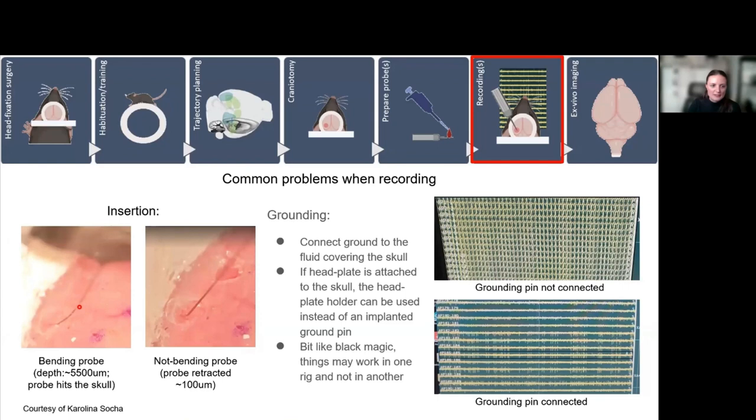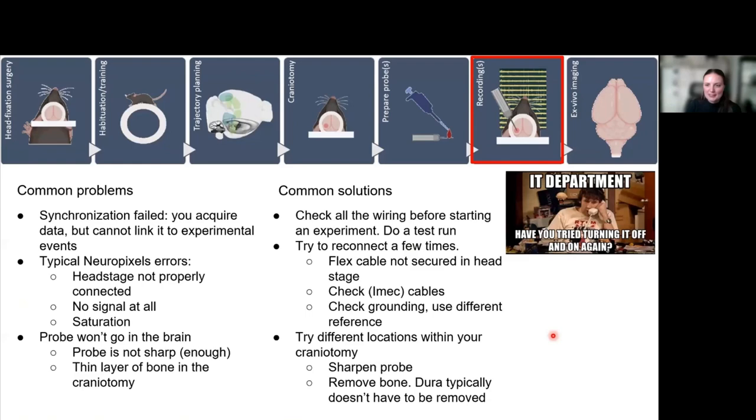There are a few common problems. One is insertion not going as planned because, for example, the probe bends. This is very scary at first when this happens. Just slowly go back up a little bit and try somewhere else or try again. Sometimes slightly higher speeds might help. If you see something like this, it means your probe is not grounded properly. Make sure to ground the mouse. I think this was already discussed by Carolina, so I don't have to go over this. Just keep checking the grounding. I don't have time anymore, but there are some common problems and common solutions. Feel free to read through them—the slides will be online.